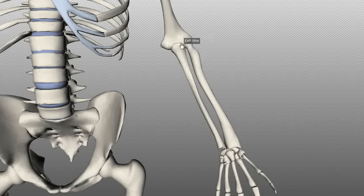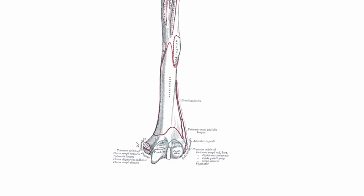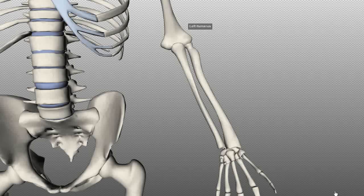Switching to another diagram to show the articular surface of the distal humerus — an anterior view of the left humerus. You can see the condyle of the humerus, with the trochlear which articulates with the ulna and the capitulum which articulates with the radius. The elbow joint is a hinge synovial joint, so you only get flexion and extension at this joint.